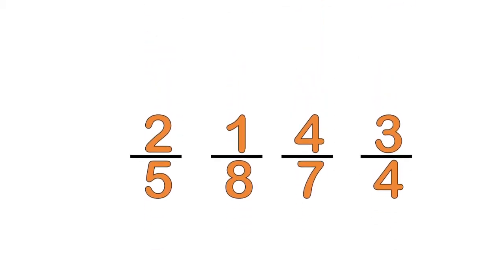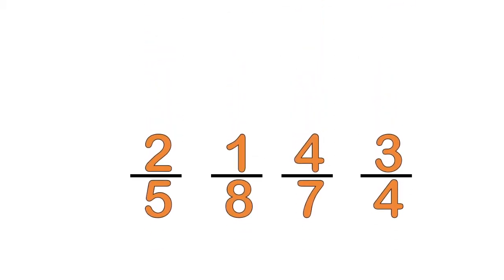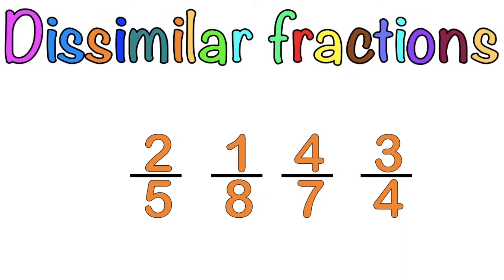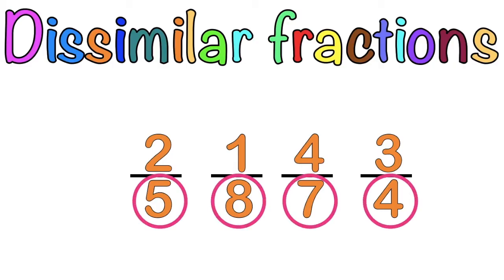How about this set of fractions? What did you notice about their denominators? This set of fractions is what we call dissimilar fractions. Why dissimilar fractions? Because as you can see, their denominators are different.